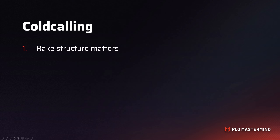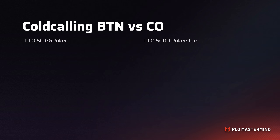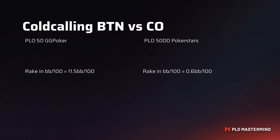One of the most overlooked adjustments is failing to account for the rake structure you're playing in. Here are some examples. We're considering cold calling from the button versus the cutoff in two vastly different environments: a PLO 50 table on GG Poker versus a PLO 5000 table on PokerStars. When playing GTO, the rake structures come out vastly different — on PLO 50 on GG you pay about 11.5 big blinds per 100, while on PLO 5000 you pay only about 0.6 big blinds per 100, which has a huge impact on the profitability of hands you can call with.